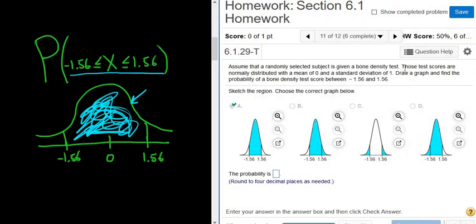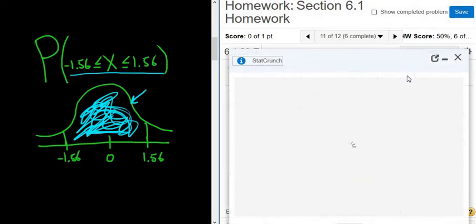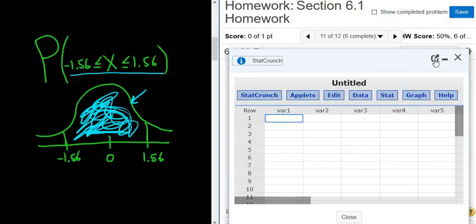And to get the probability or the area, same thing, we will go to StatCrunch. So question help, StatCrunch. I'm going to detach this so it's easier to see.